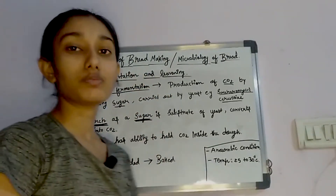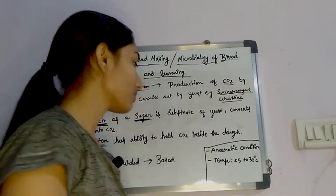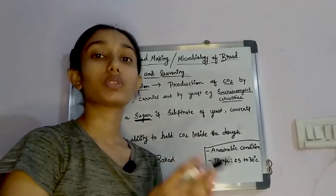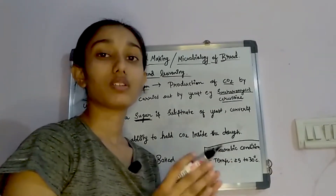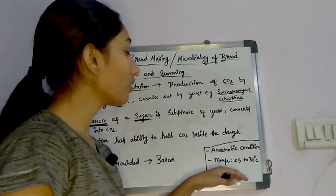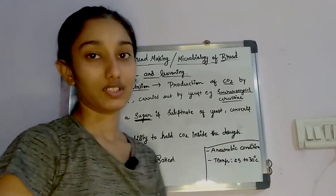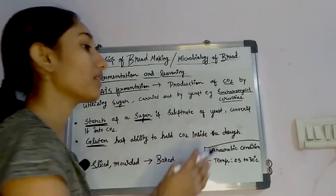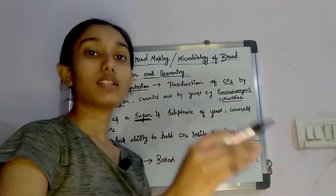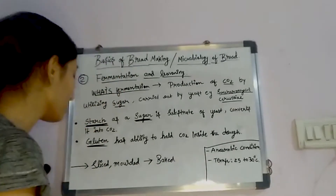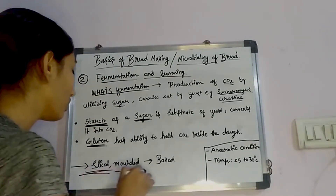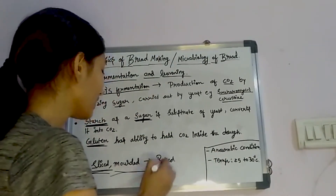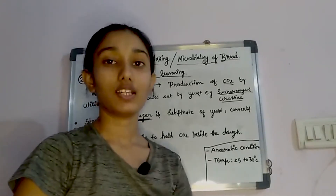For the fermentation process, certain conditions are required. The first condition is anaerobic — the yeast works when it gets an anoxic environment. Secondly, the temperature should be 25 to 30 degrees Celsius. When fermentation and leavening is completed and the dough has increased in size, it goes through industrial processes of slicing and molding.